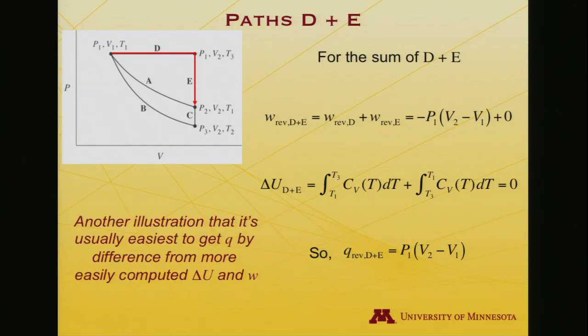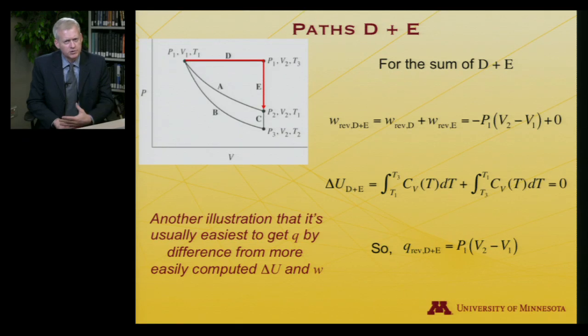So this is an illustration of something that's generally true: it's typically easier to get heat as the difference between internal energy and work than any other particular way, because we know how to compute work and we've got some ideas about how to compute energy in cases like ideal gases. Heat can be trickier, although certain limits are easy. Adiabatic, for instance, means heat is zero. That's an easy way to get heat.